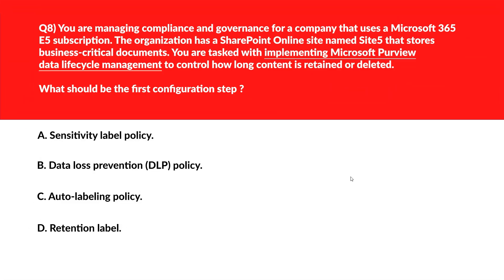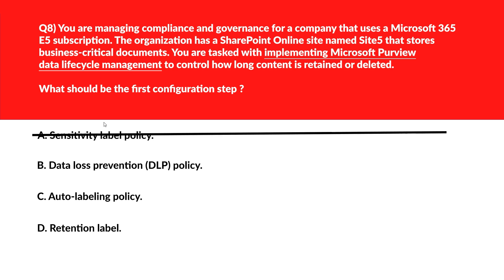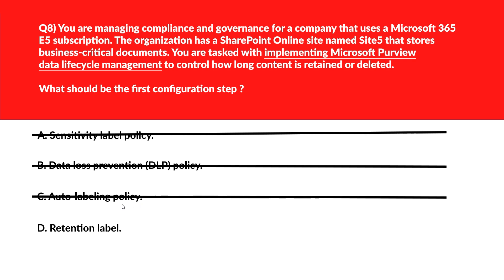We are implementing Microsoft Purview data lifecycle management to control how long content is retained or deleted. Option A: Sensitivity Label Policy handles data protection and classification, not lifecycle management — incorrect. Option B: DLP Policy detects and restricts sensitive data sharing but does not govern content lifecycle — incorrect. Option C: Auto Labeling Policy applies existing retention labels but requires the label to be created first — incorrect. Option D: Retention Label defines the rules for retaining or deleting content and is the foundational element required before applying lifecycle policies. Option D is the right choice.